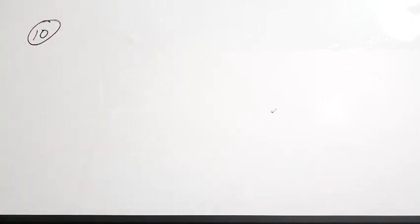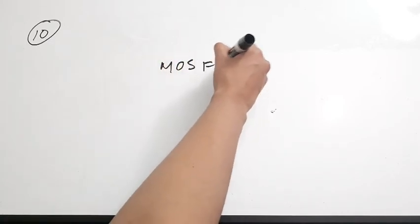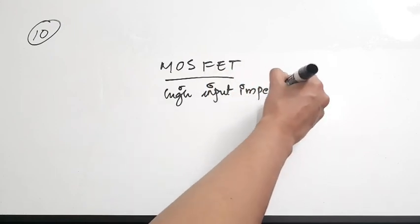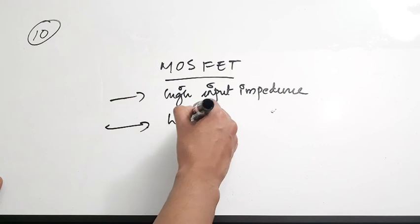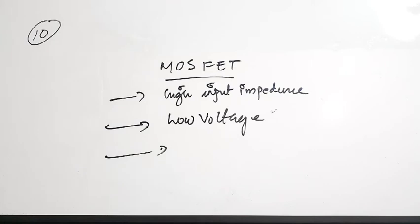The tenth question: which of the following devices has the highest input impedance — JFET, ordinary transistor, crystal diode, or MOSFET? MOSFET has the highest input impedance. Key properties of MOSFETs: they are low-voltage devices that cannot handle high voltages, they have high input impedance, and they can be used for high-frequency applications.